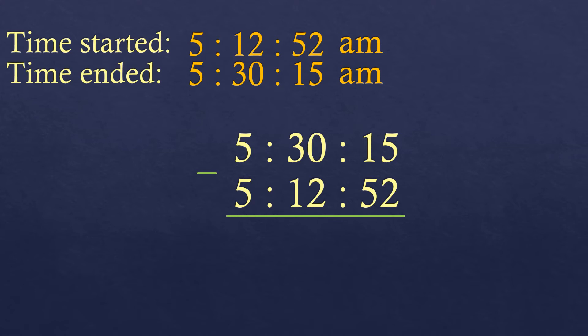We subtract from right to left — from seconds to minutes to hours. Now 15 minus 52: observe that the number above, which is 15, is smaller than the number at the bottom, so it's not possible to subtract. We need to borrow from the minutes. Keep in mind that one minute is 60 seconds, so we take one minute from the minutes and add 60 seconds to the seconds. This 30 becomes 29.